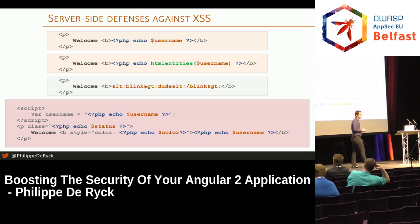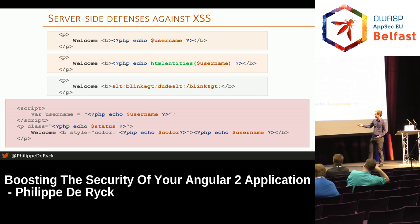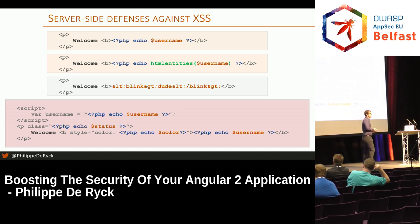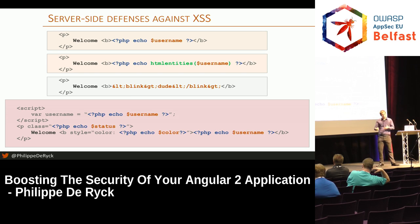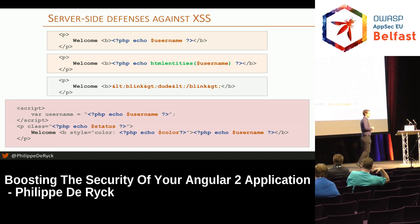What makes cross-site scripting so hard to defend against is that it's not limited to one output — it's everywhere. Your whole application is full of outputs in all kinds of different contexts: inside a script block, inside an HTML attribute, inside an HTML tag. All of these contexts require a different way of encoding characters. For example, an open bracket is dangerous in a certain context but means nothing in another. That is why cross-site scripting is so difficult.